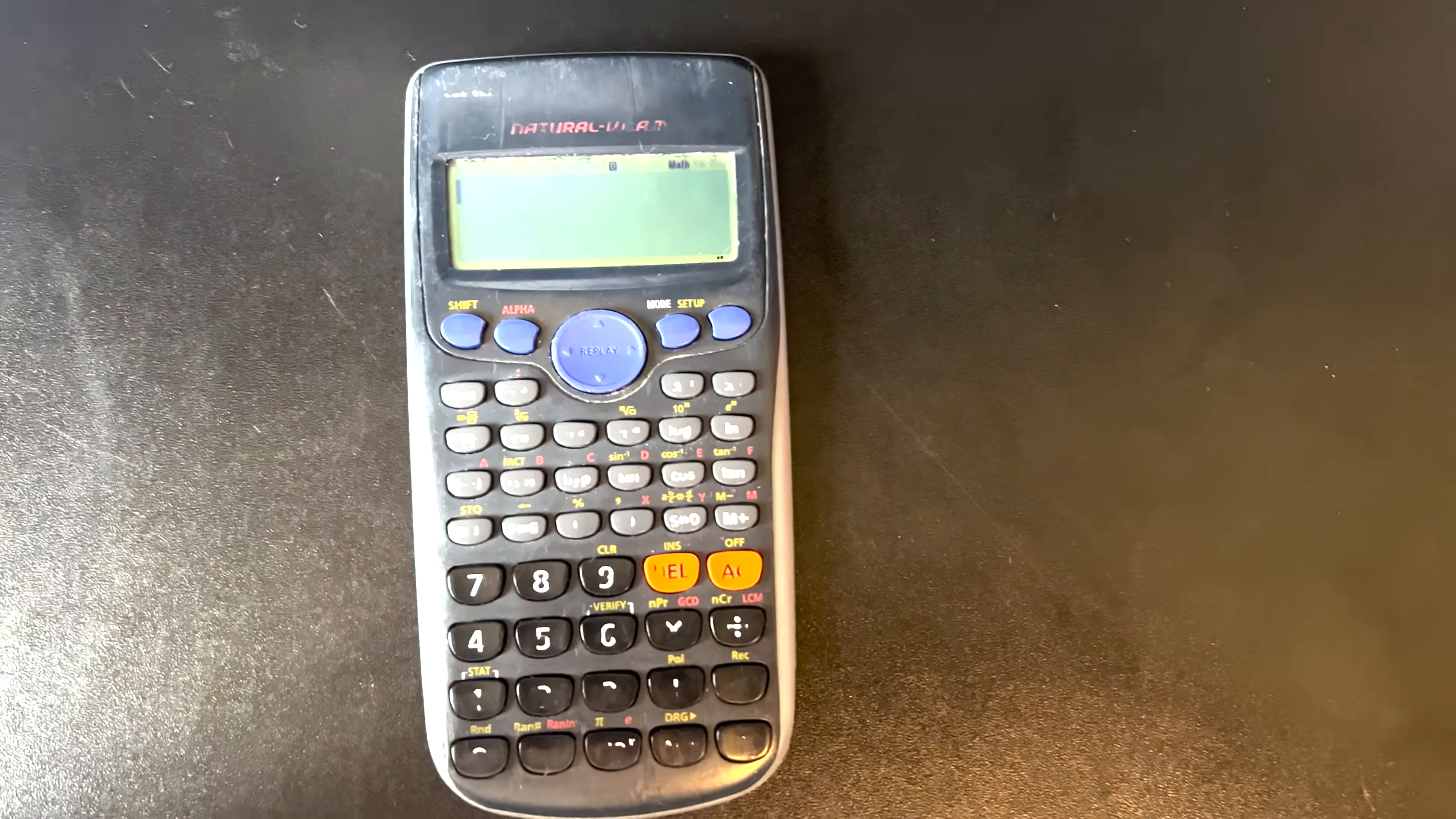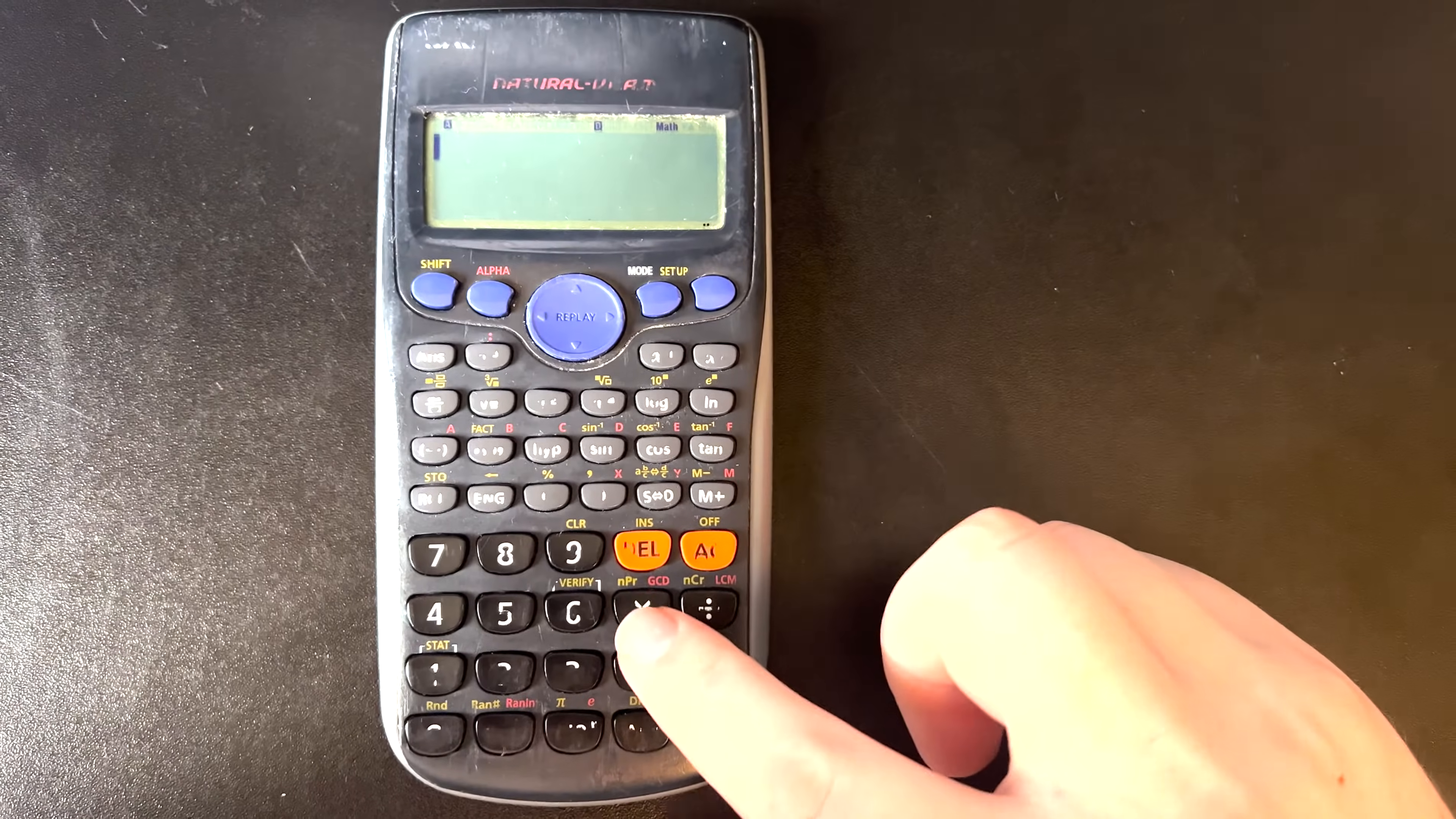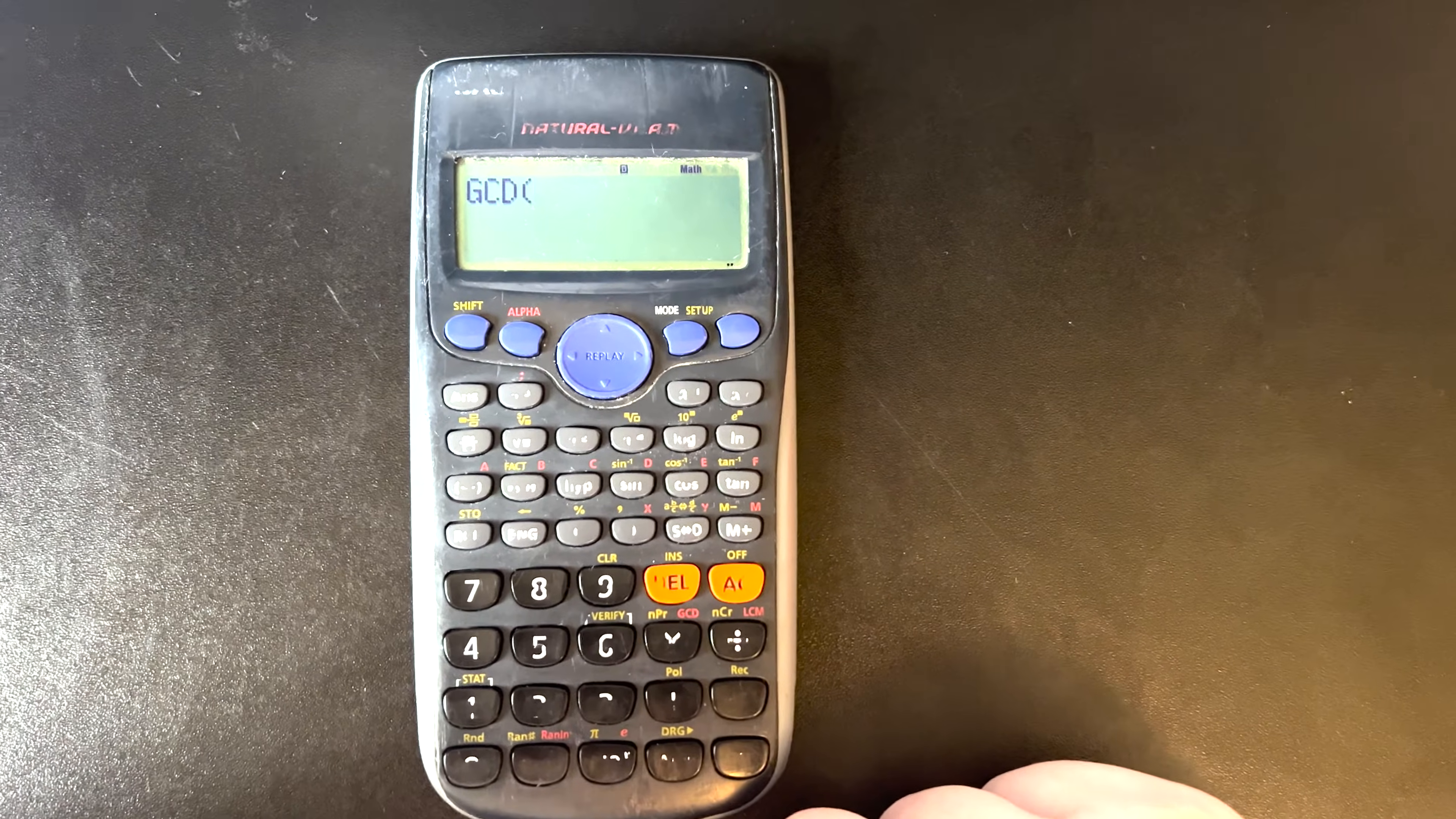Okay, so the first thing we're going to want to do, let's look at our greatest common divisor. First we'll press alpha, and then down here just above the multiplier, you can see it says GCD, so we press that, and now it gives us this option up here.